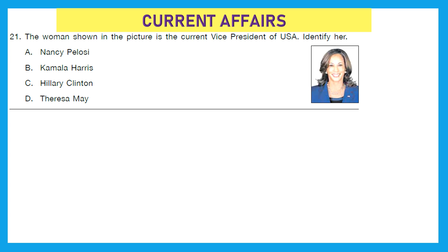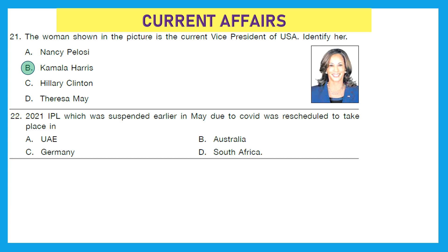The woman shown in the picture is the current vice president of the USA. Identify her — is it Nancy Pelosi, Kamala Harris, Hillary Clinton, or Theresa May? The right answer is Kamala Harris. Question 22: The 2021 IPL, which was suspended in May due to COVID, was rescheduled to take place in...